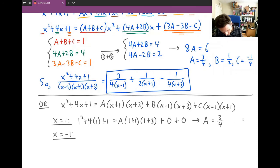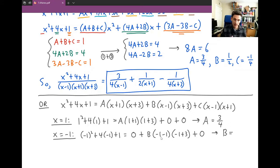When you do that, you get (-1)² + 4(-1) + 1 = 0 + B(-1-1)(-1+3) + 0. Solving for B, this becomes -2 = B(-2)(2) = -4B. Dividing, you get B = 1/2.